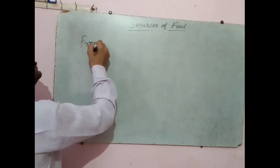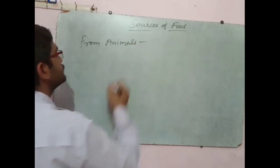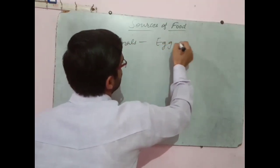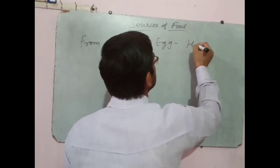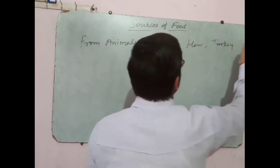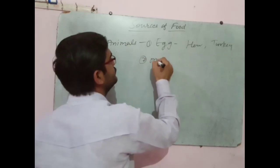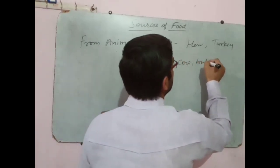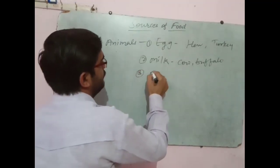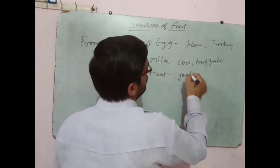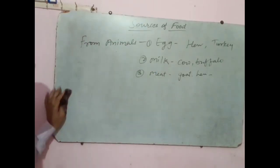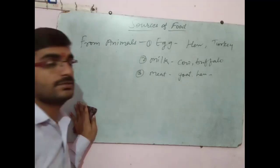The next topic which we are going to discuss is food from animals. From animals we get food from hen, turkey, duck, etc. Milk from cow, buffalo, goat. And meat from goat, etc. These are the sources of food which we get from animals.